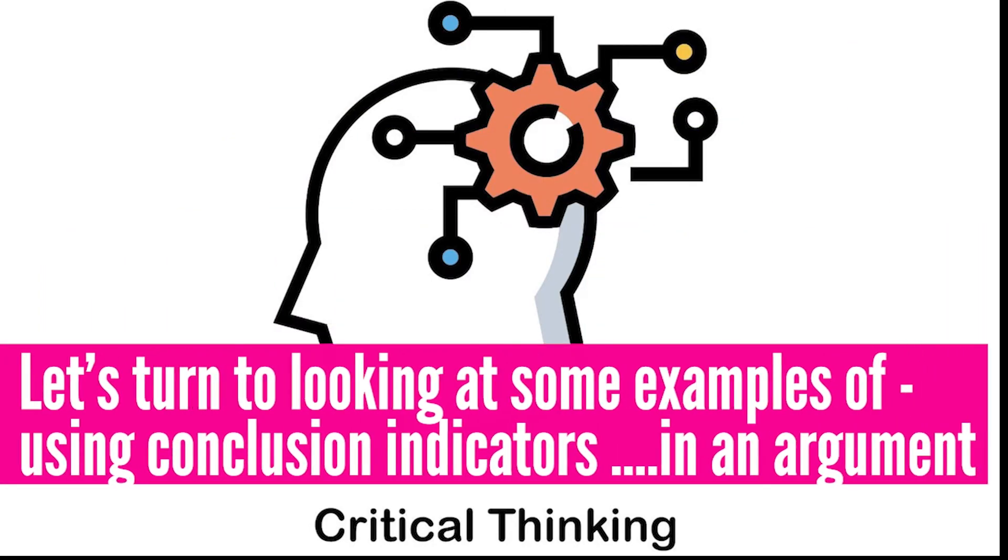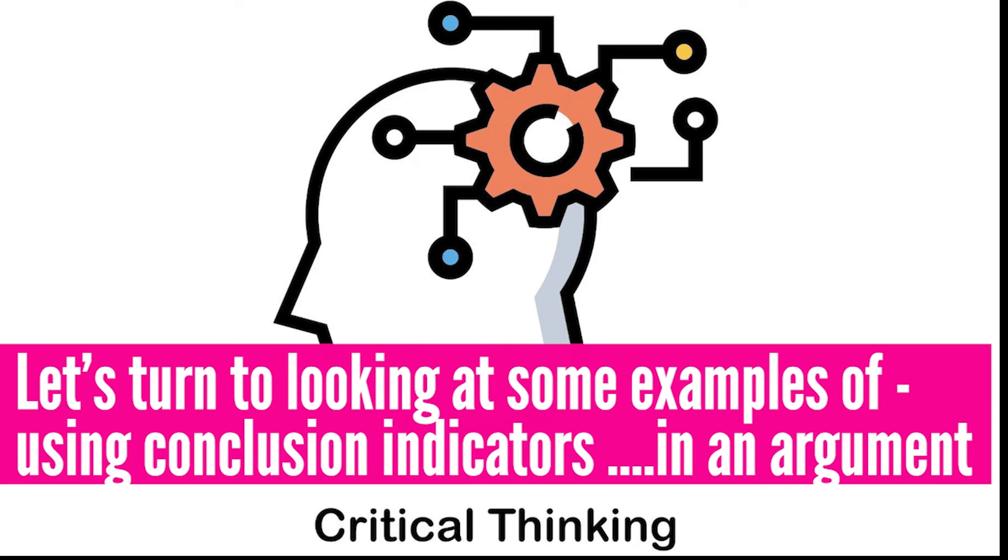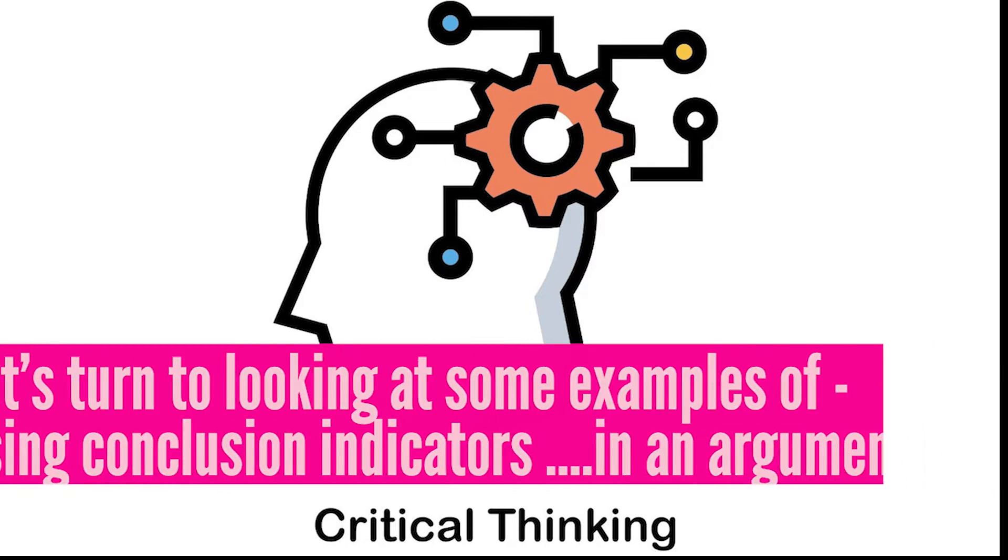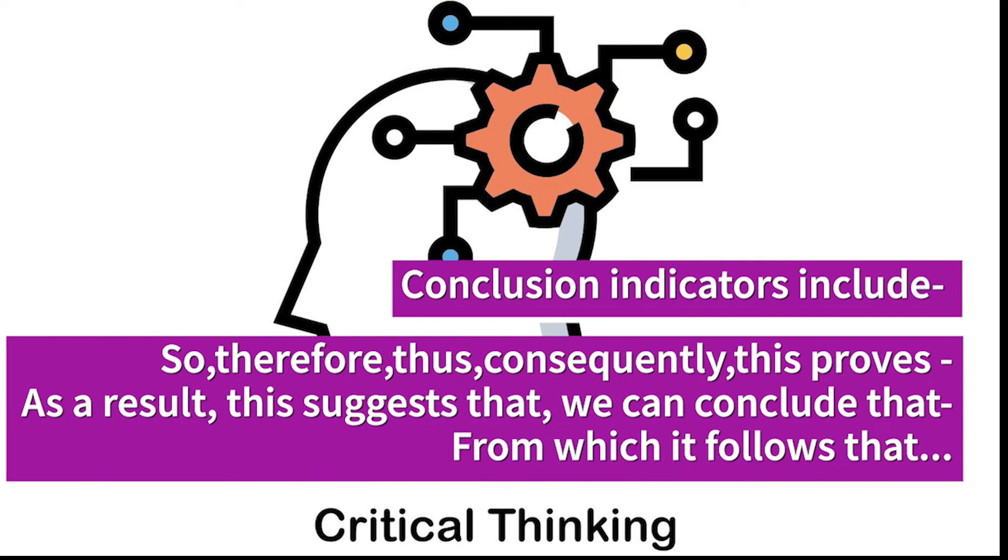Now let's turn to some examples of conclusion indicators. So conclusion indicators that you can use in an argument. So these can include so, therefore, thus, consequently, this proves, as a result, this suggests that, we can conclude that, from which it follows that. So some examples here of your conclusion indicators that you can use in an argument.